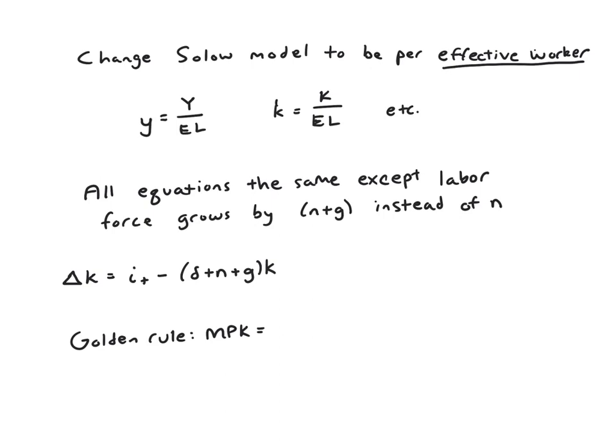Finally, we could think, well, the golden rule would be modified. Before, with just having population growth, it was MPK equals delta plus n, but we said we'll have to replace all the n's with n plus g. So this now becomes MPK equals delta plus n plus g.